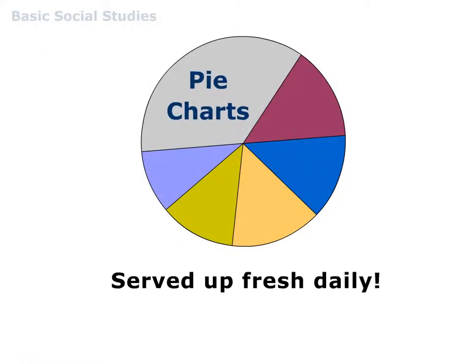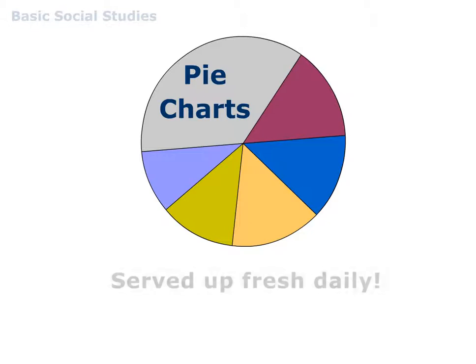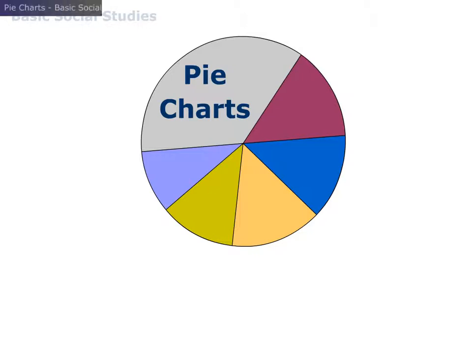Pie charts are served up daily in newspapers, on television, in magazines, and in math and social studies lessons. They are also known as circle graphs and are easy to interpret if you learn how to identify the parts.